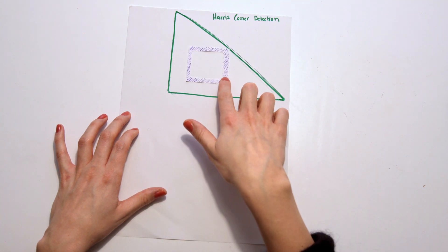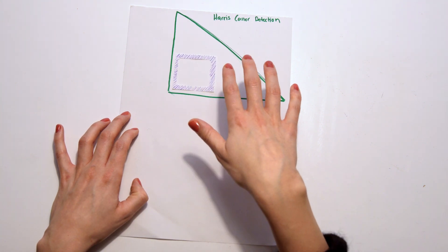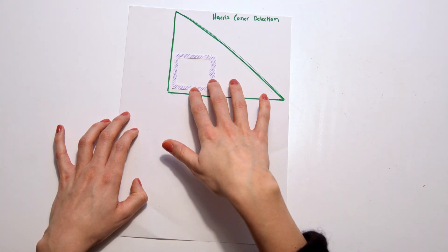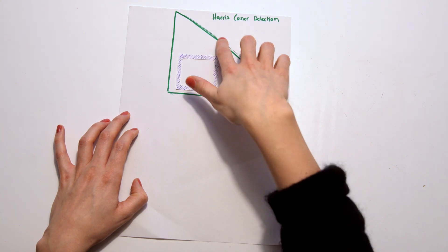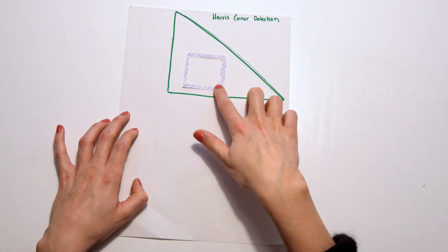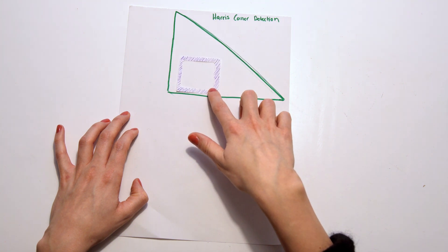If you move the window in here, it will look at the differences from the original point to the slightly moved point. And if you are inside of the triangle, you won't have any differences because the pixels are basically the same.